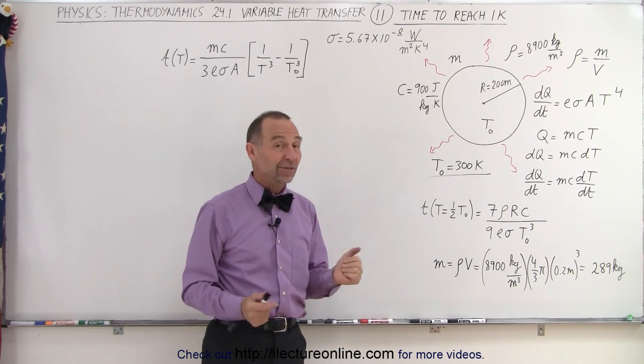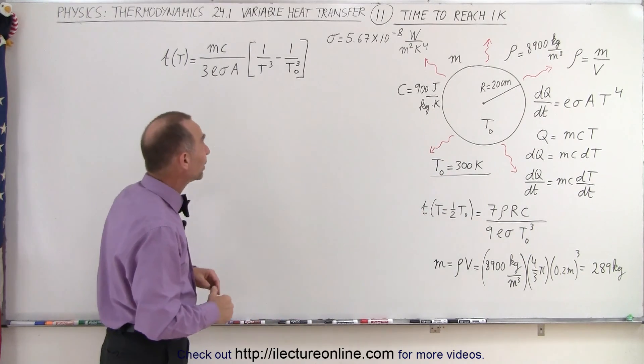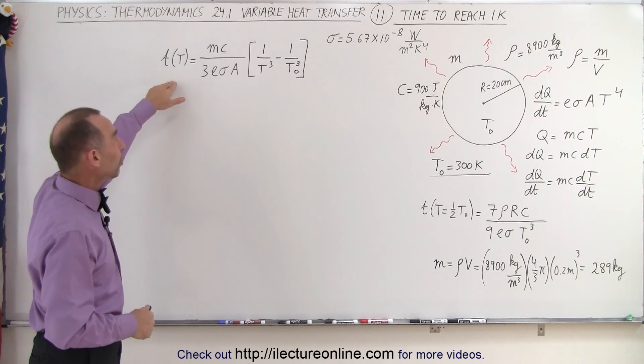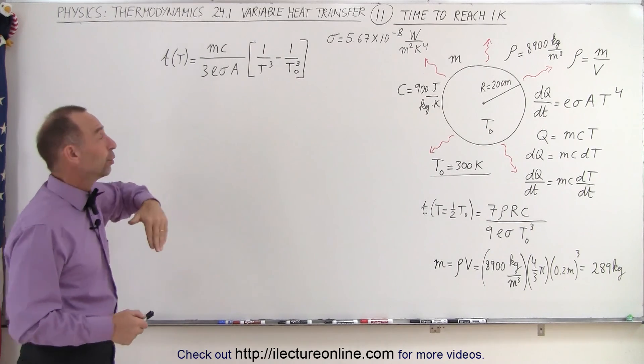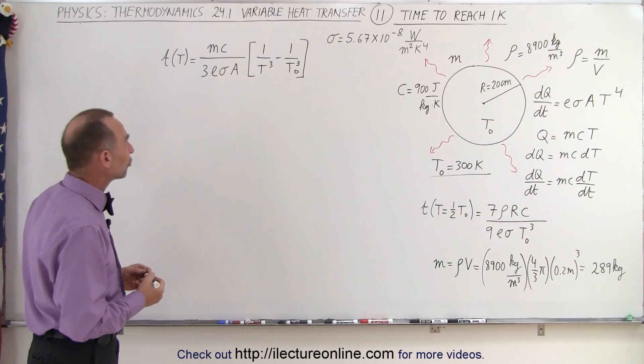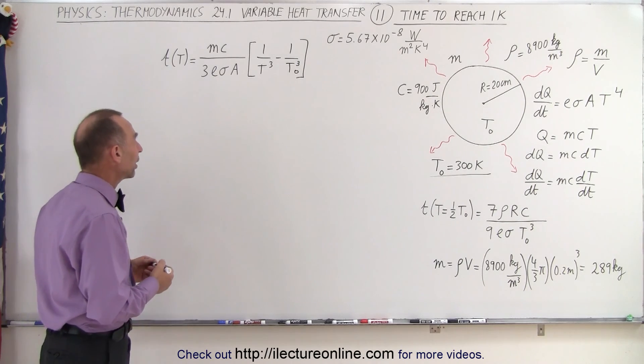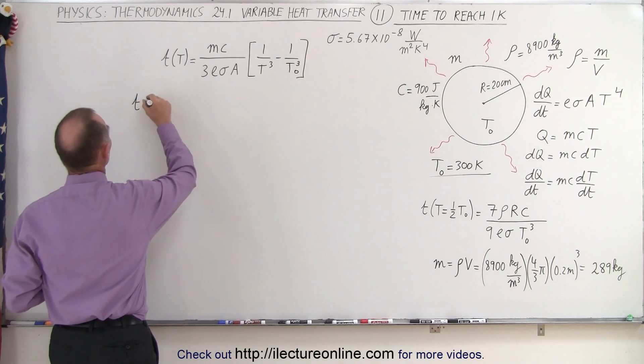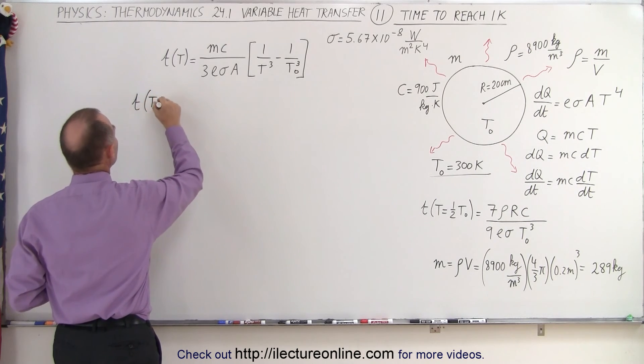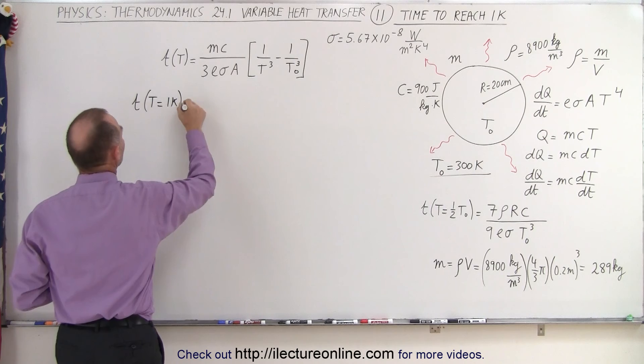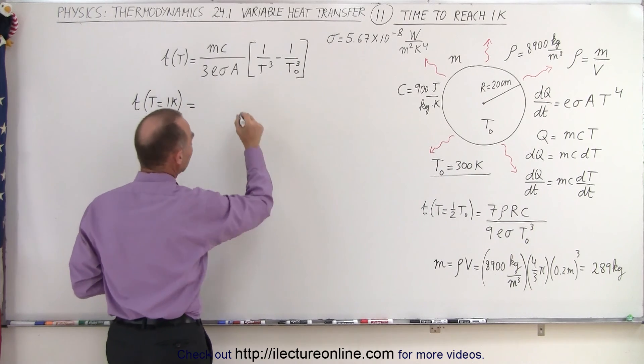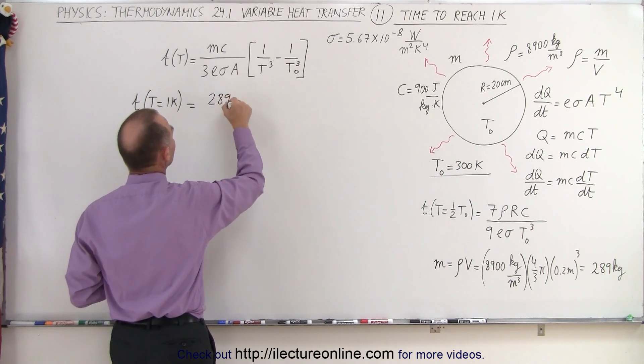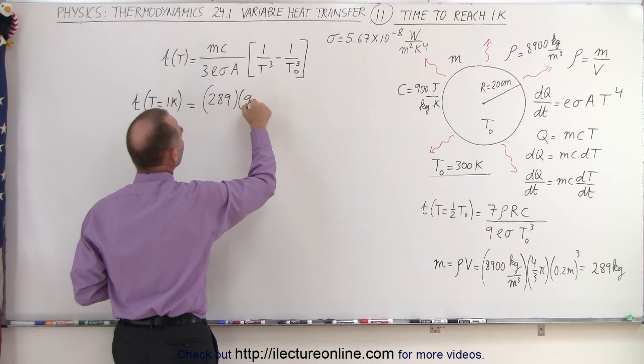The result was actually quite surprising, so here we go. Here was one of the equations that we derived in an earlier video and we'll put it in this format—it makes it a little bit easier to work with. Let's go ahead and plug in the values. The time that it takes to go down to the temperature being equal to one Kelvin is equal to, well, we have mass of 289 kilograms, specific heat 900 joules per kilogram per Kelvin degree.